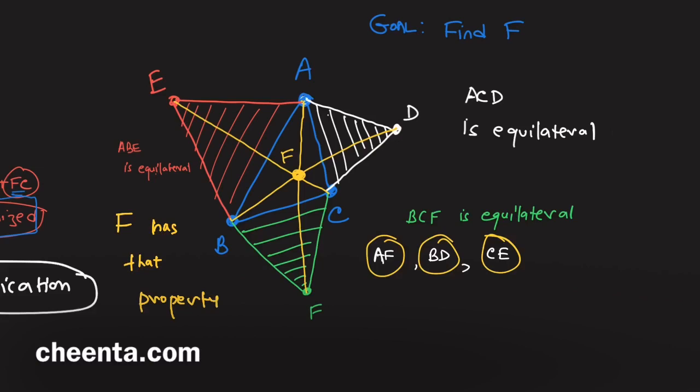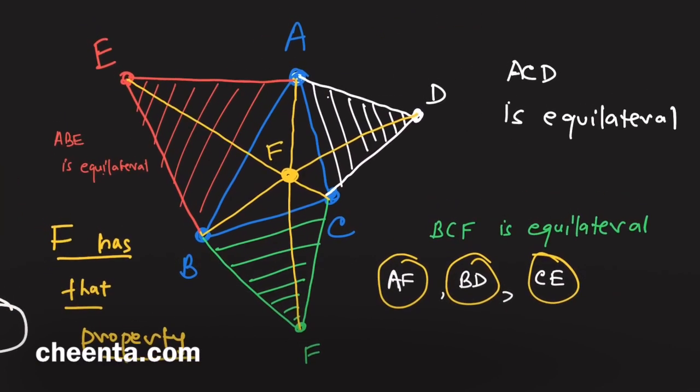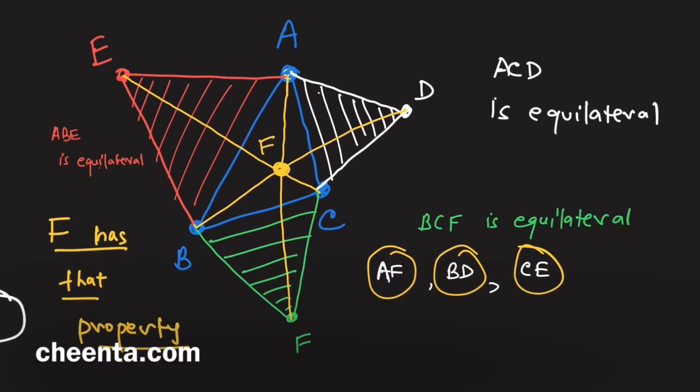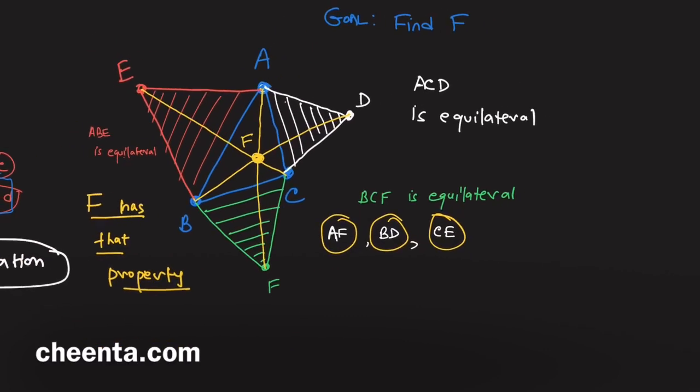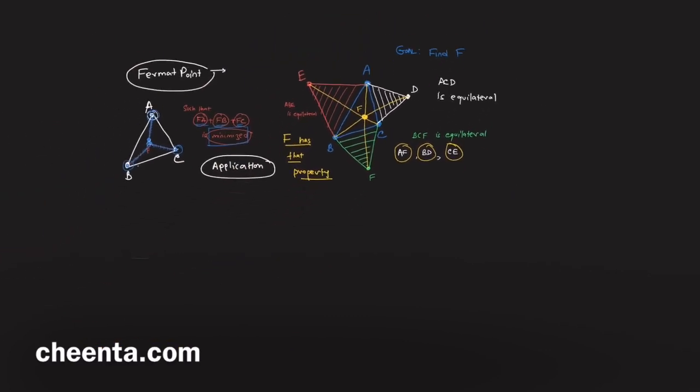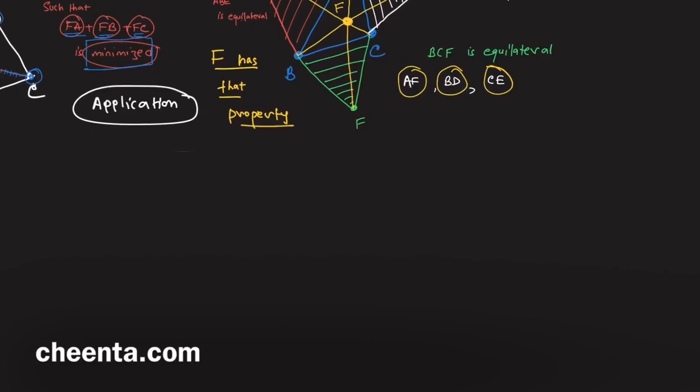In fact, it is a unique point, one can show, and that requires a little bit of geometric work. There is some beautiful transformation geometry involved in the proof. Step one: show that AF, BD, and CE pass through a single point. They are concurrent.